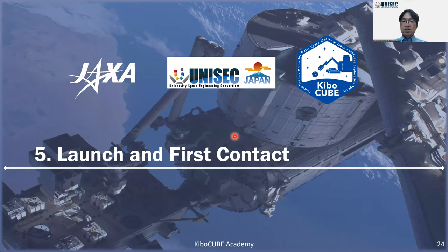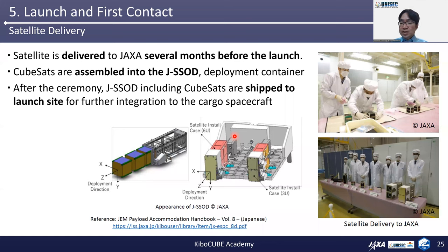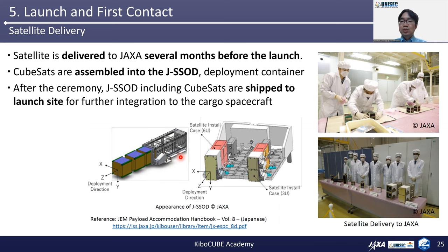Next is Section 5: Launch and First Contact. Please imagine your complete satellite built and brought to the space agency for handover. I talk about the case when we use the service of ISS J-SSOD satellite deployment. The satellite should be delivered to JAXA several months before the launch. CubeSats are assembled into the JSSOD — this is a deployable container for multiple CubeSats.